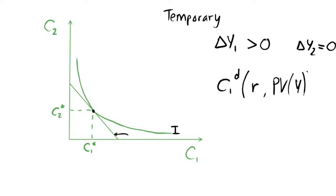How does this affect our consumption in periods one and two? Consumption in period one depends on the interest rate and present value of income. We can write some demand function for consumption in period one — it depends on the interest rate, which is effectively the relative price of consumption in periods one and two, and it also depends on the present value of our income. If we have higher income, we're going to want to spend more in period one, and if we have a higher interest rate, we're going to want to spend less in period one.